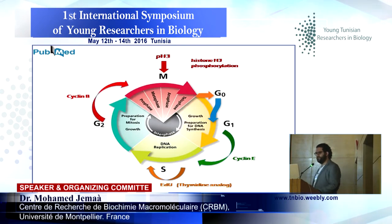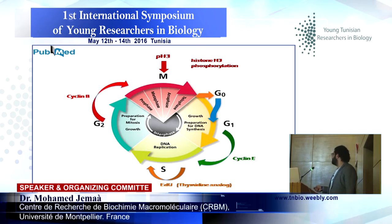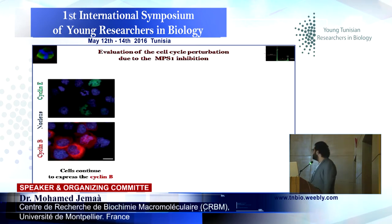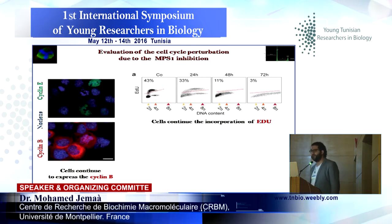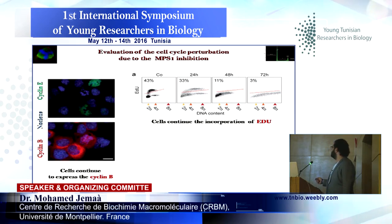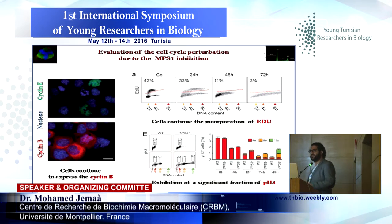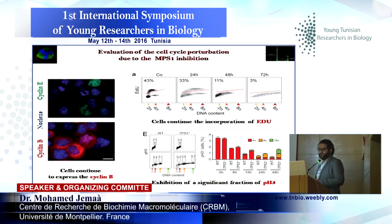So we decided to investigate other markers of the cell cycle, like cyclin B for the G2/M transition, or cyclin E expressed in late G1 phase, or the incorporation of EdU — a thymidine analog — to check DNA duplication, or also histone H3 phosphorylation, which is a marker of mitosis. We can clearly see that cells continue to express cyclin B after MPS1 inhibition, and also continue EdU incorporation, at least after two days of treatment, and also show a significant fraction of histone H3 phosphorylation. All these markers confirm that cells continue cycling and continue mitosis entry.